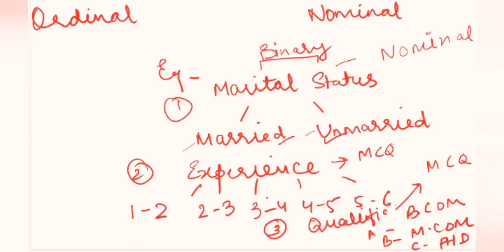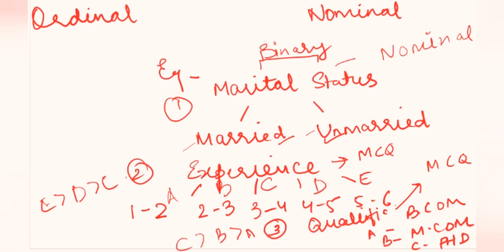When we talk about experience, I can say E has more experience than A, B, C, D, E, right? In terms of qualifications, we can say C is more qualified than B, or B is more qualified than A.